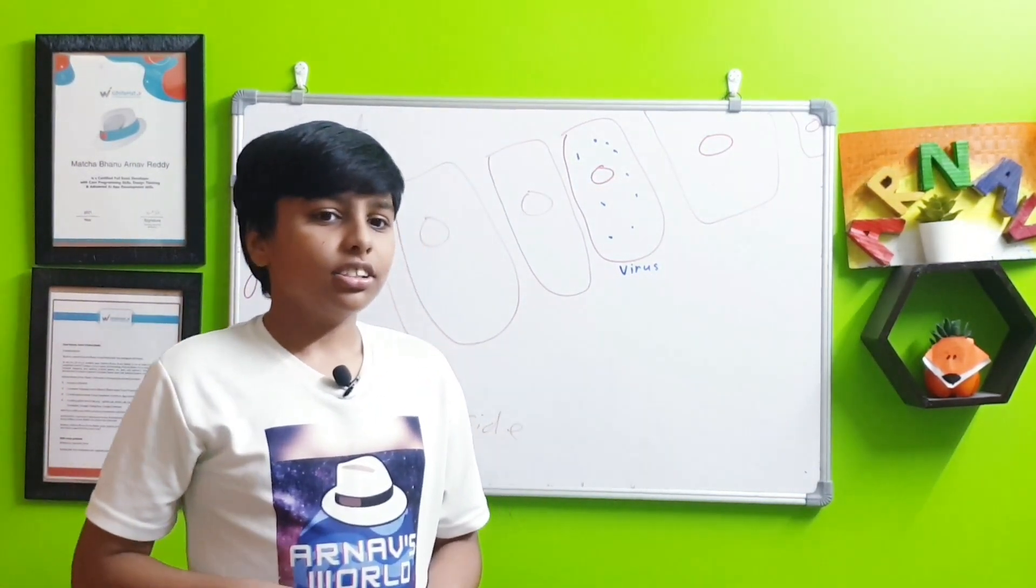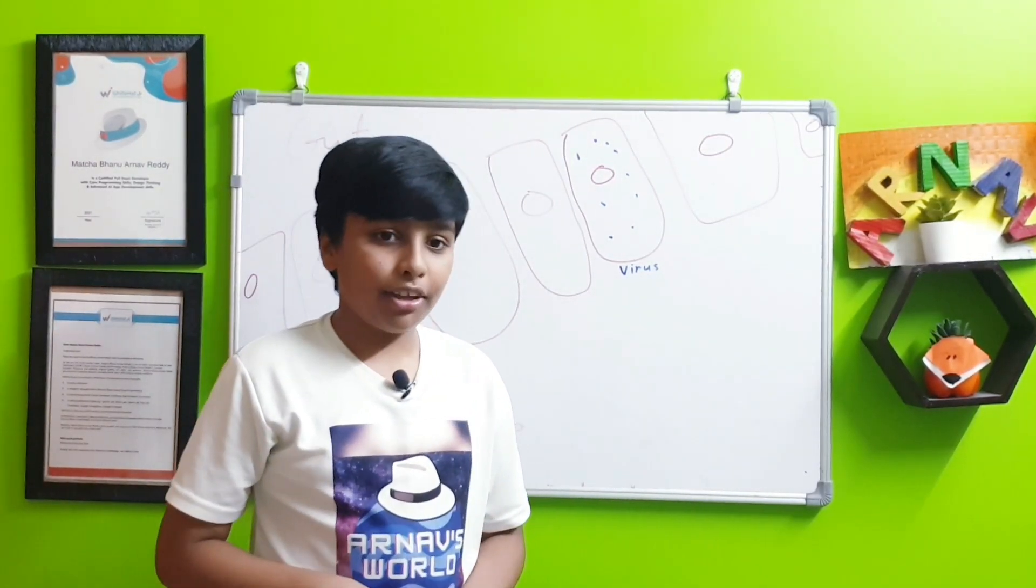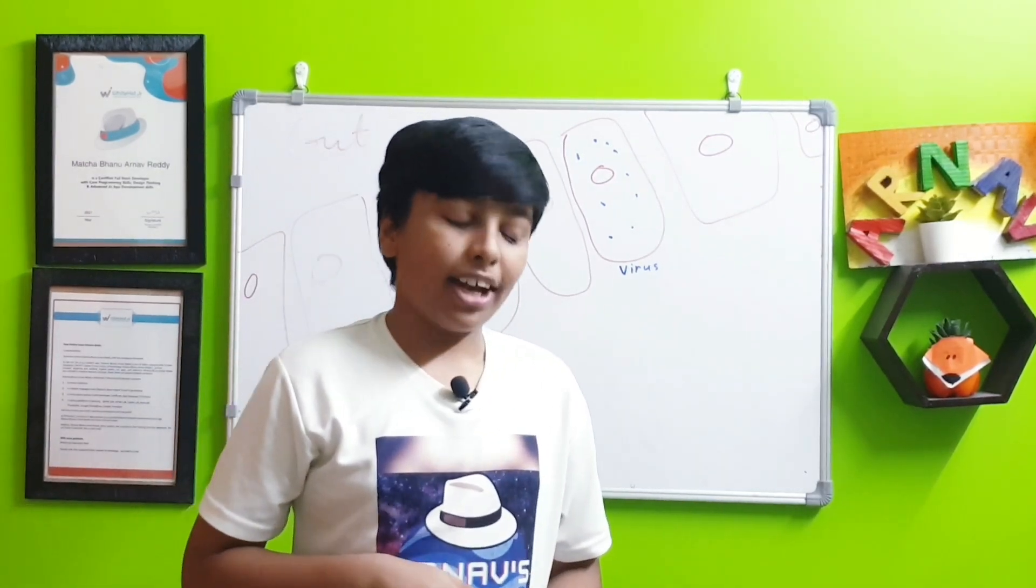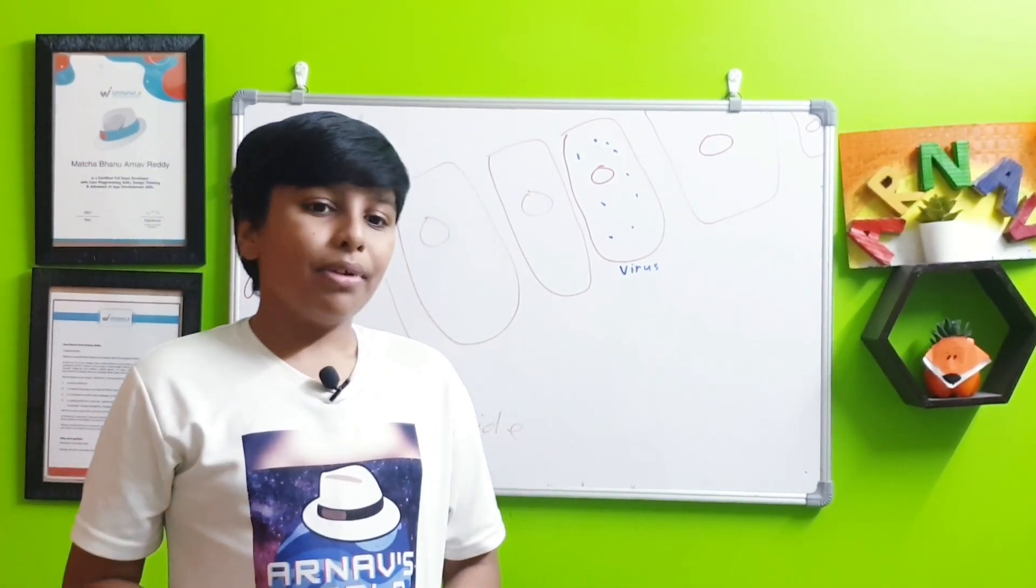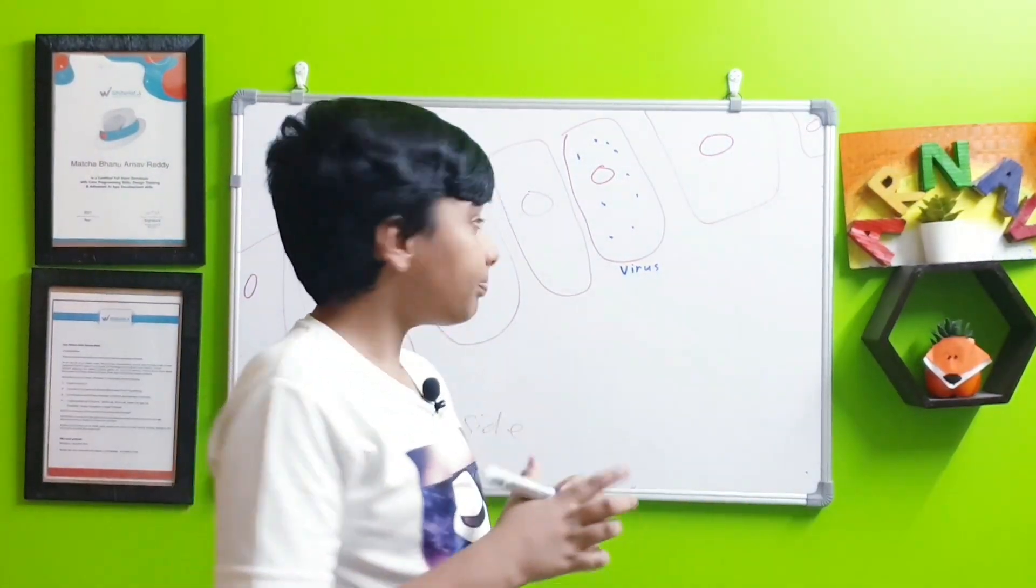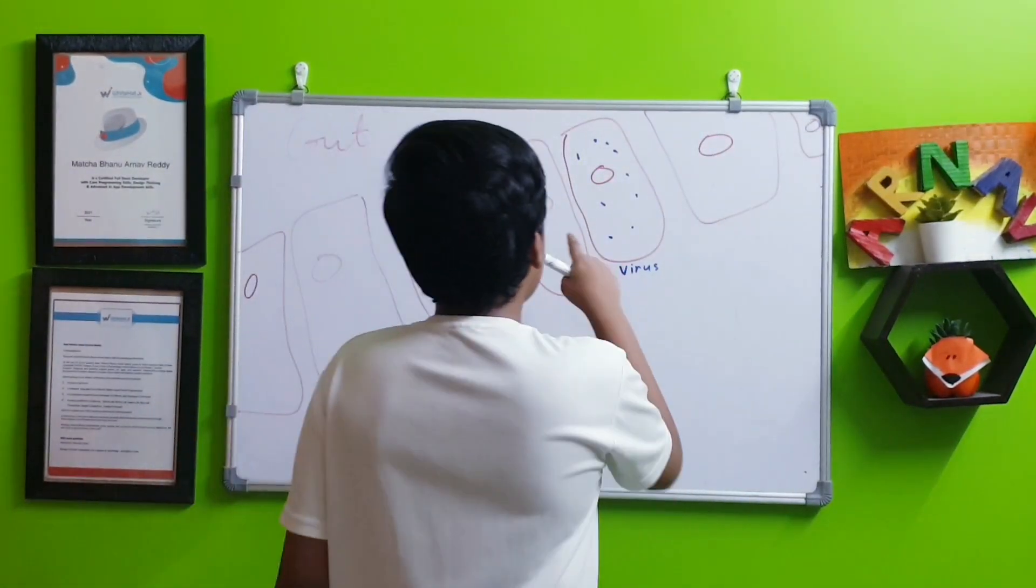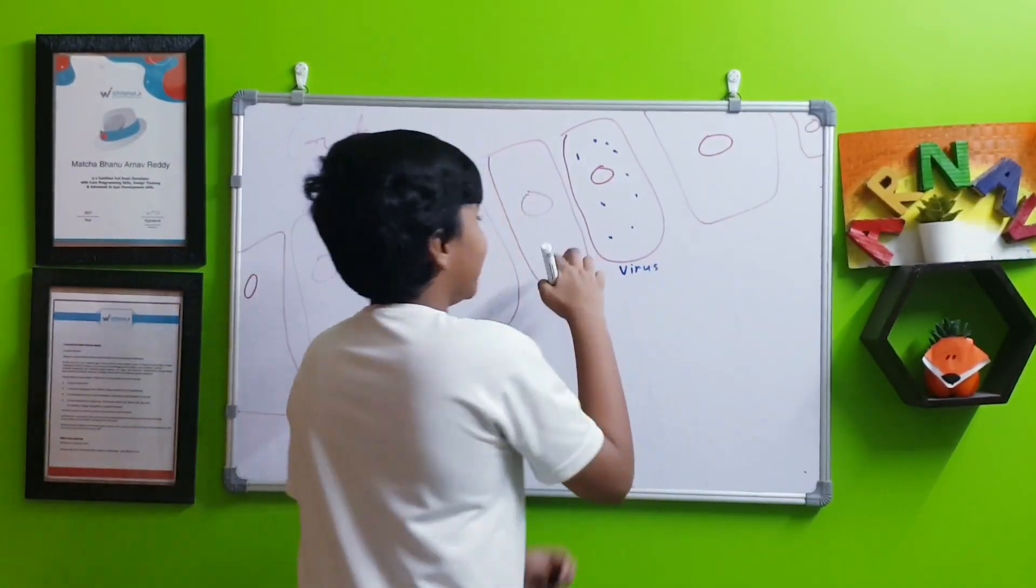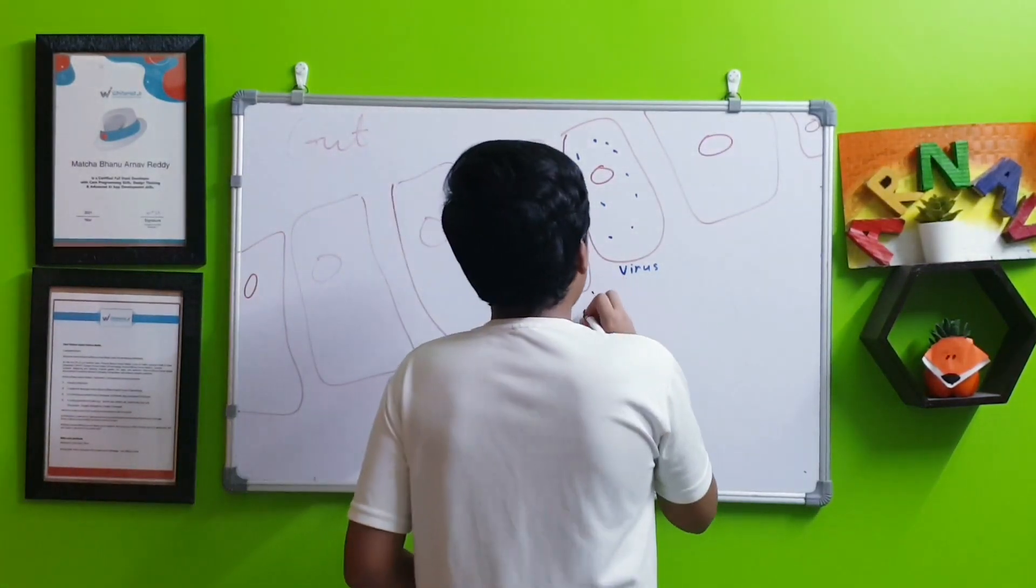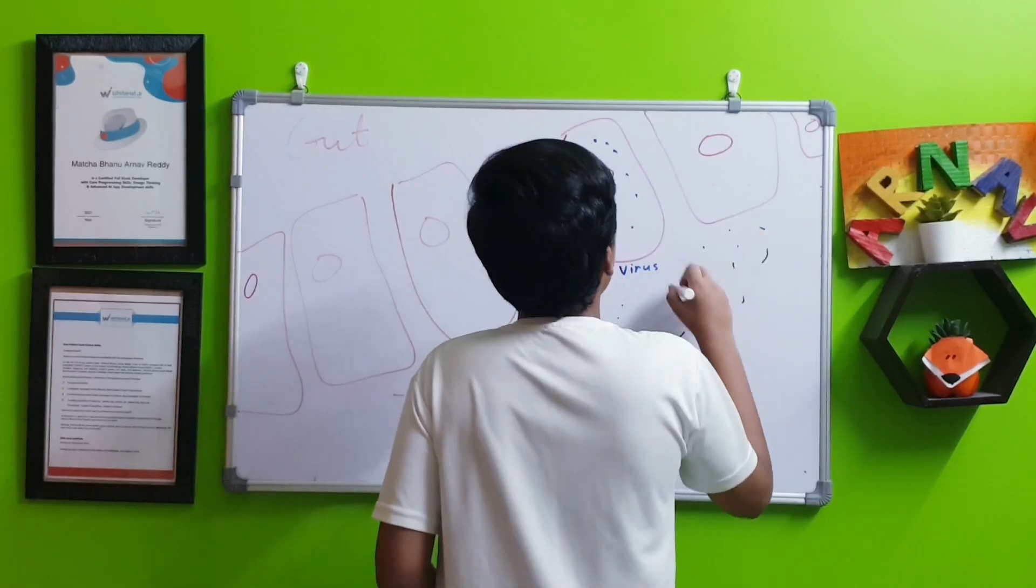Then it releases these small proteins known as interferons. These interferons are very important when a viral attack takes place. For the interferons, let's take another color. These two cells which have seen that this cell has been attacked by a virus will release these interferons around.